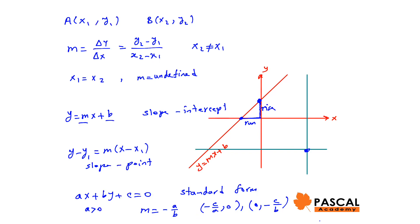The vertical line passing through the point (a, b) is x equals a, and the equation of the horizontal line passing through (a, b) is y equals b.